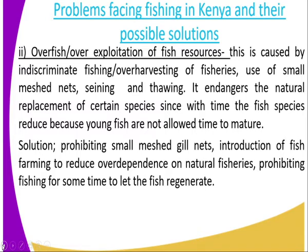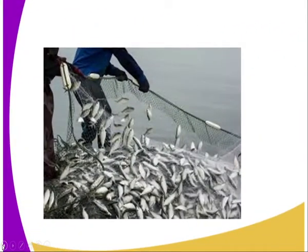The solution to overfishing includes prohibiting small mesh gill nets to ensure such nets are not used, and introducing fish farming to reduce over-dependence on natural fisheries. We can also prohibit fishing for certain periods to let fish regenerate. As you can see from the image, the small nets catch fish that are too young and too small, that have not even reached maturity.